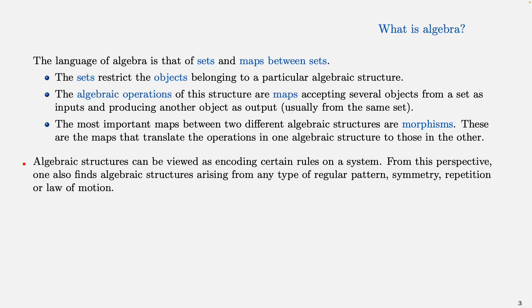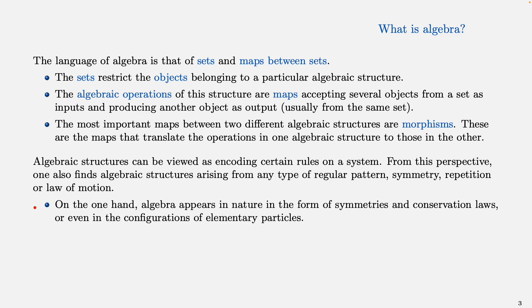An algebraic structure can be viewed as an encoding of certain rules. From this perspective, we can find algebraic structures arising from any type of regular pattern or symmetry or repetition or law of motion. Algebra appears in nature in the form of symmetries and conservation laws in physics, or even in the configuration of elementary particles.